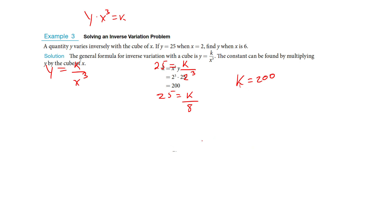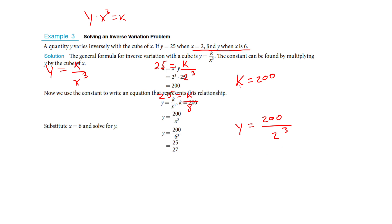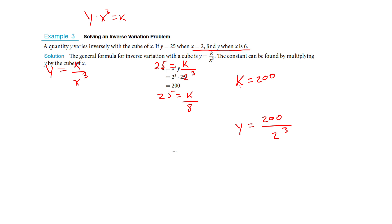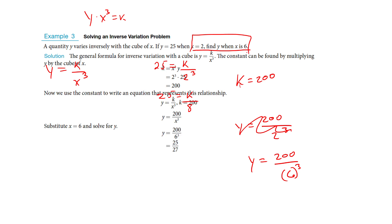Now I know my constant of variation, so let's use that to finish this problem. When x is 6, I plug it into y equals 200 over x³. So that's 200 over 6 to the third. Crunching that down and reducing, you get 25 over 27.